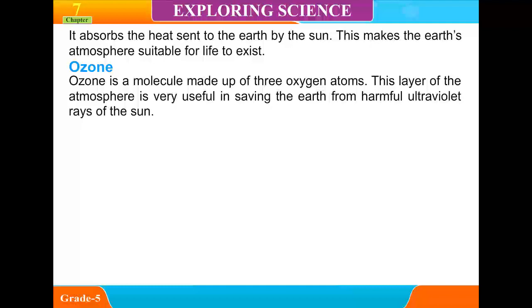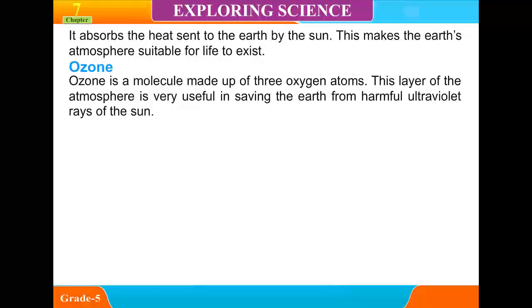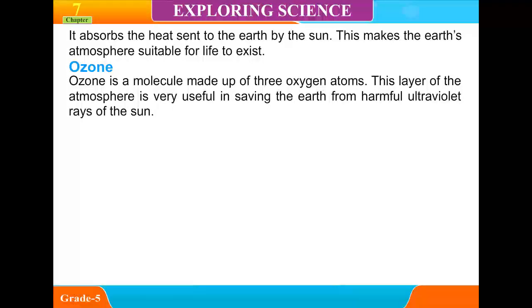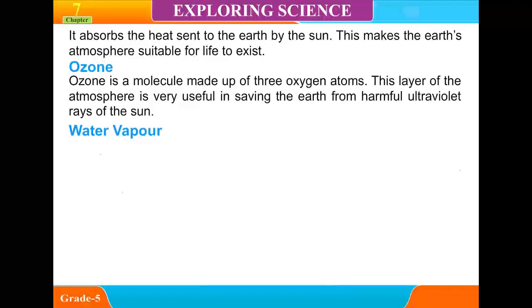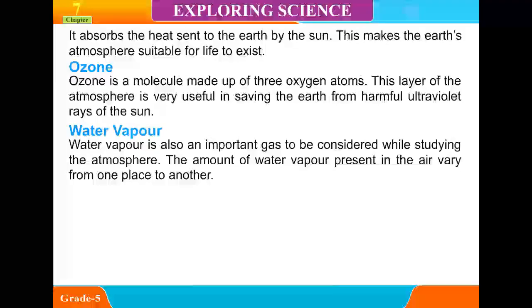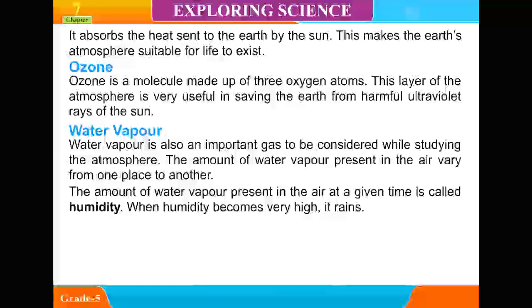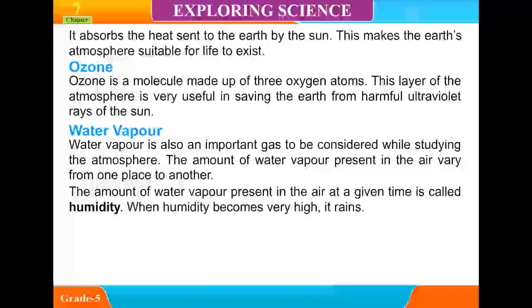Ozone is a molecule made of 3 oxygen atoms. This layer of the atmosphere is very useful in saving the earth from harmful ultraviolet rays of the sun. Water vapor is also an important gas to be considered while studying the atmosphere. The amount of water vapor present in the air varies from one place to another. The amount of water vapor present in the air at a given time is called humidity.